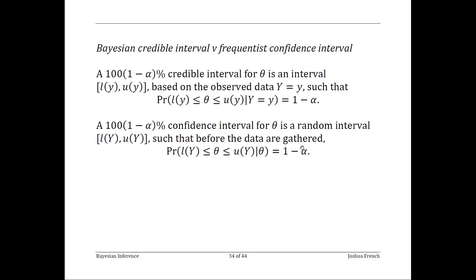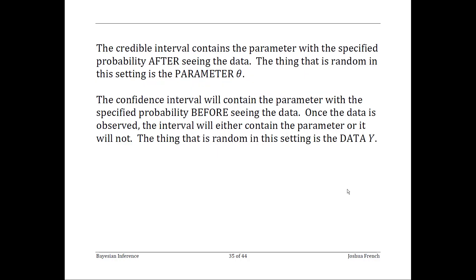The intervals are what is changing from sample to sample. Another way of stating the difference is that after seeing the data, the credible interval contains the parameter with probability 1 minus alpha — the thing that is random in this setting is the parameter theta. The confidence interval will contain the parameter with a specified probability before seeing the data; once the data is observed, the interval either contains the parameter or it does not. The data are what is random in this setting.